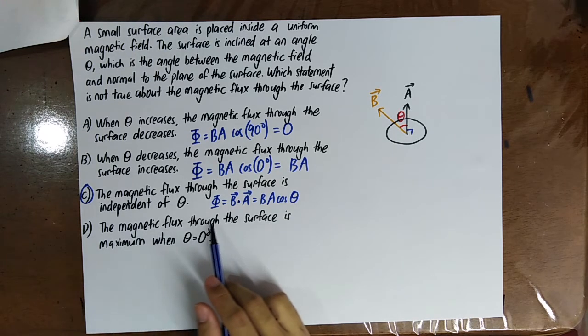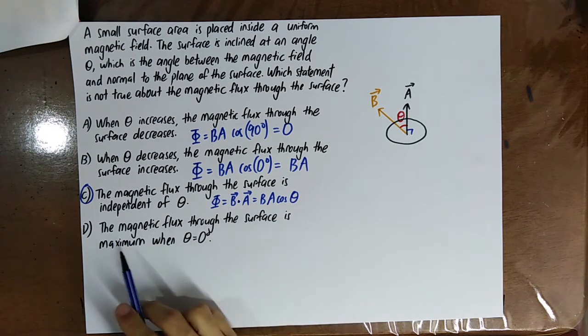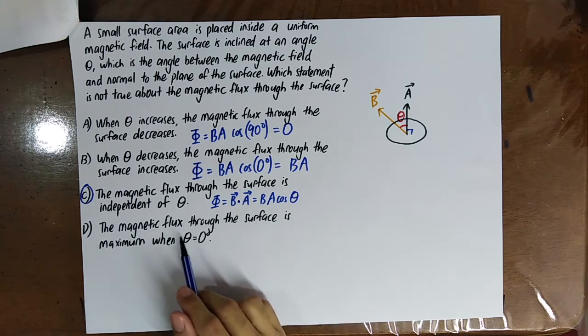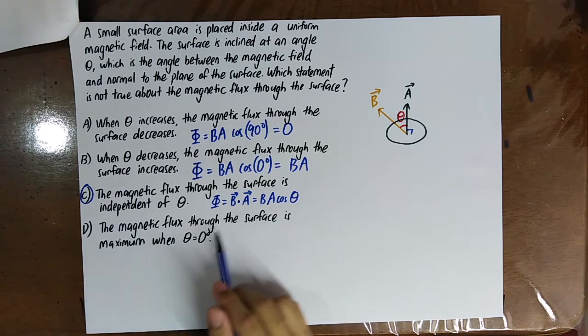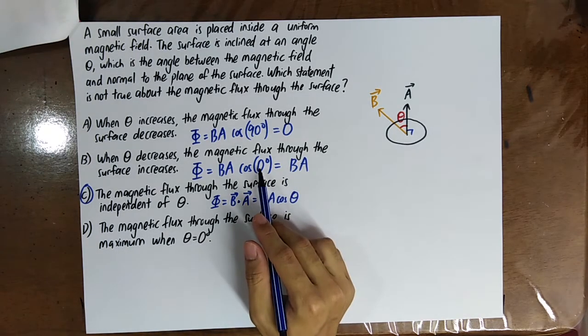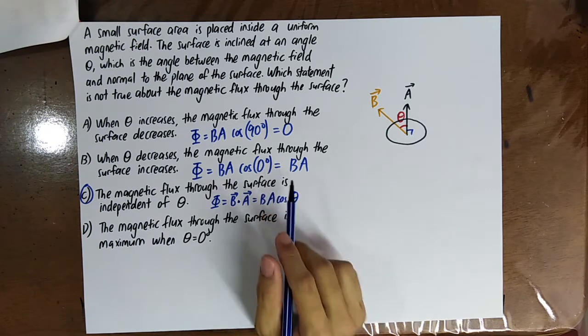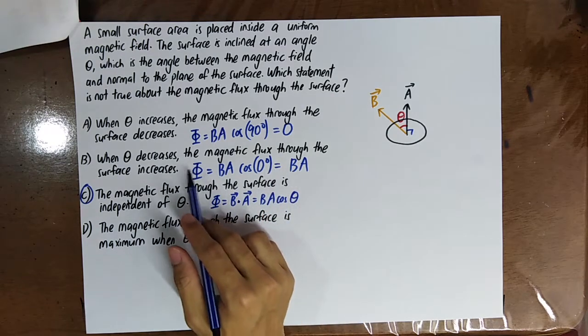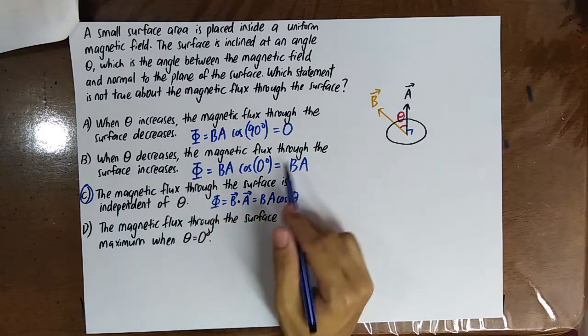When theta equals 0, the magnetic flux is maximum — so this statement is correct. Therefore the incorrect statement is the one claiming magnetic flux is independent of theta.